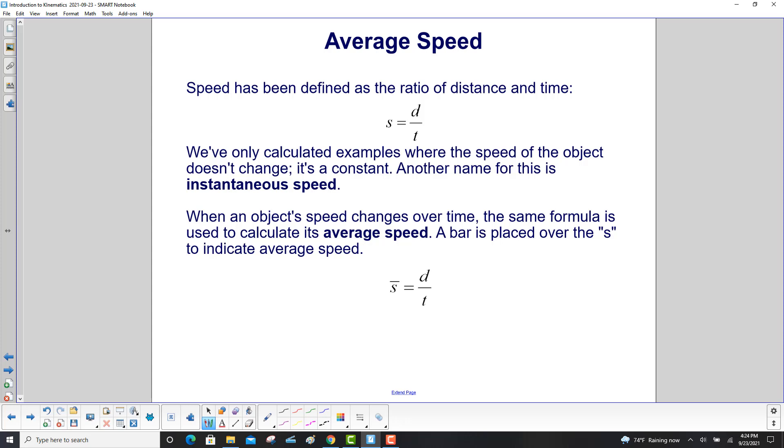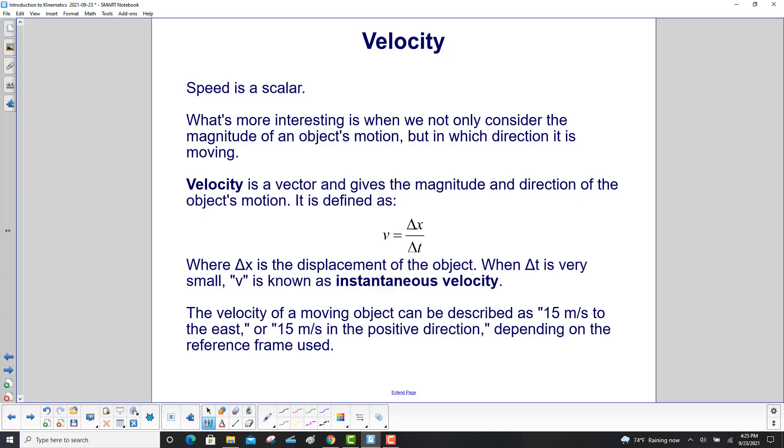Speed has been defined as a ratio of distance and time. We've only calculated examples where the speed of the object doesn't change. It's a constant. Another name for this is instantaneous speed. When an object's speed changes over time, the same formula is used to calculate its average speed. A bar is placed over the S to indicate average speed. Earlier, we started with distance, which is a scalar, and then we defined displacement, which is a vector version of that. We're going to do the same thing here.